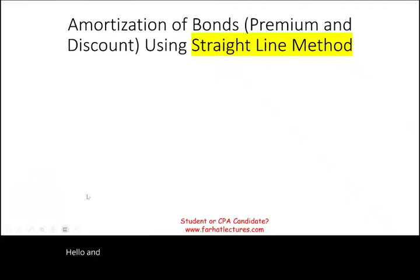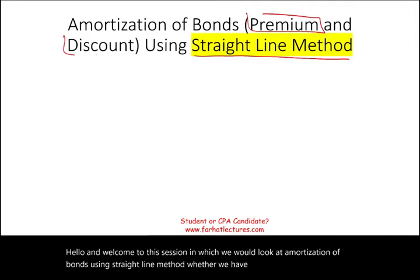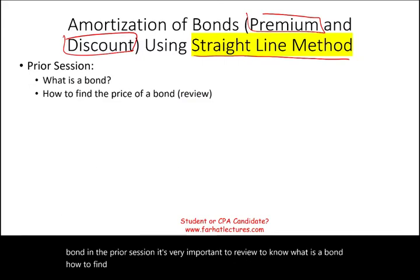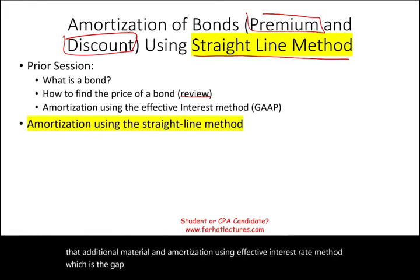Hello and welcome to this session in which we would look at amortization of bonds using the straight line method, whether we have a premium or a discount bond. In the prior session, it's very important to review what a bond is and how to find the price of a bond. We'll review that here, along with amortization using the effective interest rate method — the GAAP method. In this session, we would look at amortization using the straight line method.